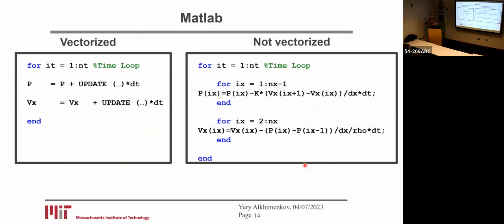If our code is vectorized, we can avoid this additional for loop and write just these two lines.